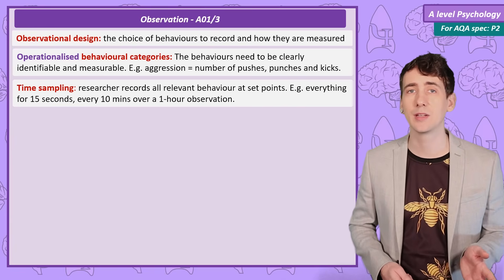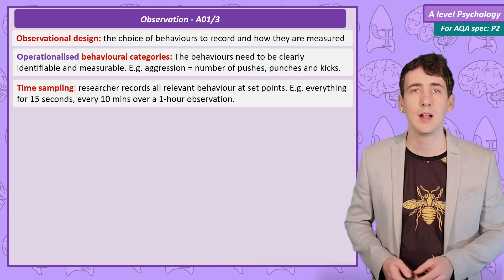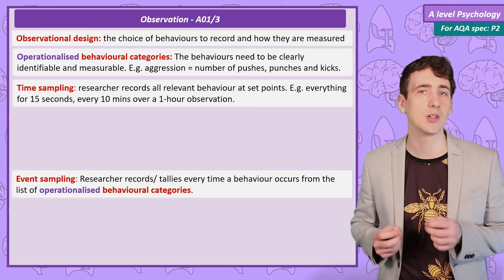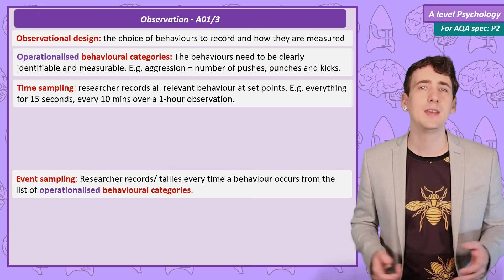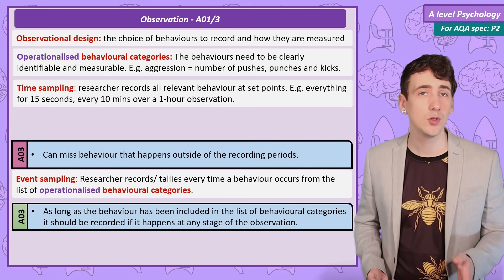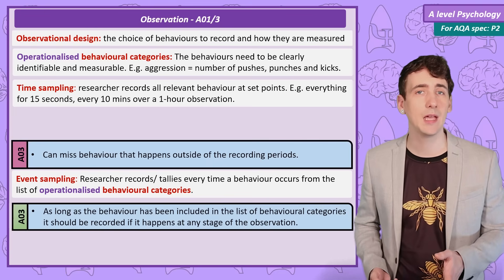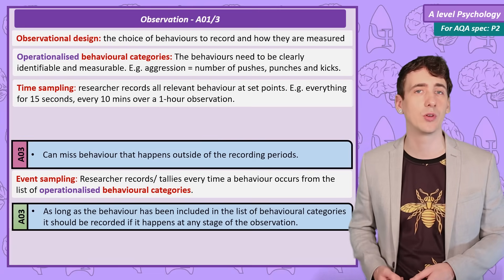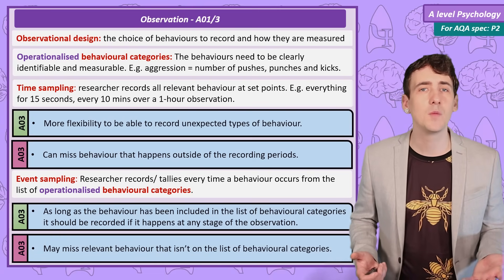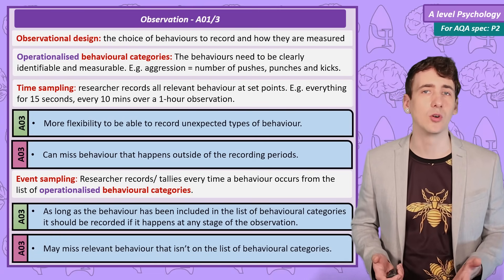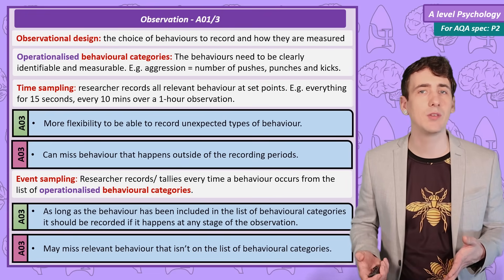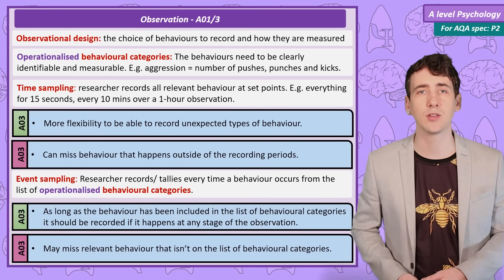Another option is event sampling. This is when the researcher records all behaviour from the list of operationalised behavioural categories. Neither approach is perfect. With time sampling, you can miss important behaviour that happens outside the short recording periods. With event sampling, you may need lots of observers to accurately record all participants, and you might not record relevant behaviour that isn't on the list of behavioural categories.